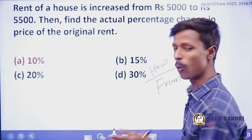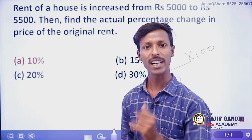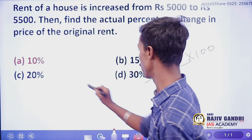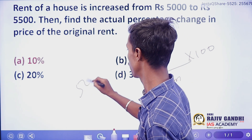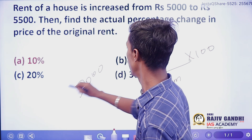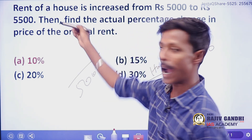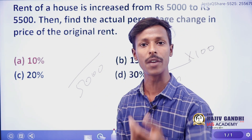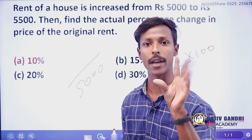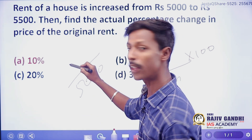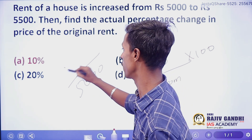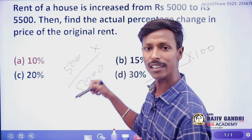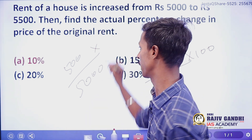Now, the V2R rent initial — that is the from value, which is 5,000. How much is the difference? 500. That is the numerator. Multiplied by 100, because percentage.